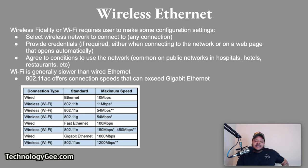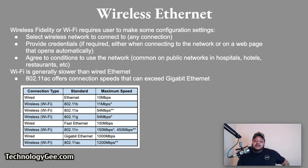Wireless Ethernet is generally slower than wired Ethernet, although the most recent implementation of Wi-Fi 802.11ac offers connection speeds that can exceed Gigabit Ethernet. Here is a chart that displays wired versus wireless Ethernet connection speeds.